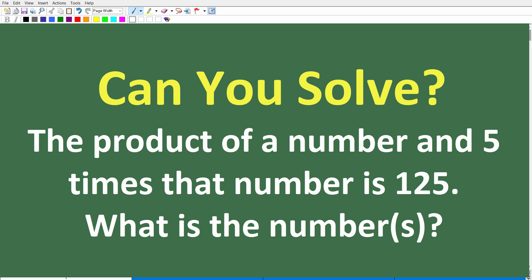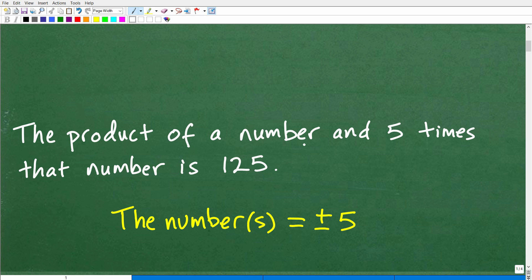Okay, so let's get to the solution and then we're going to, of course, talk about how to solve this problem. All right, so the product of a number and five times that number is 125. What is the number or numbers?